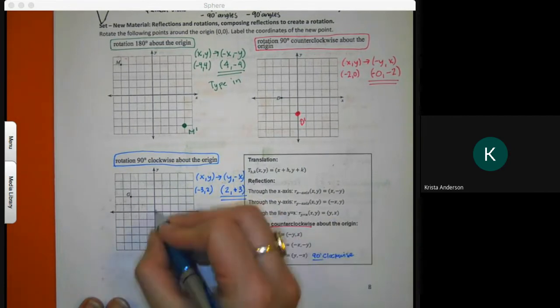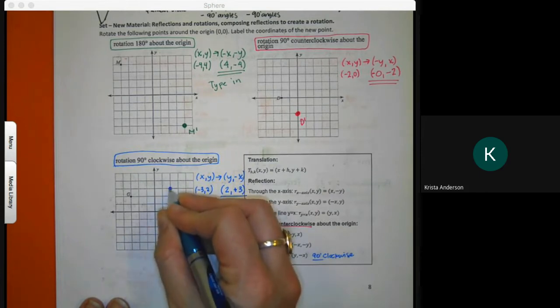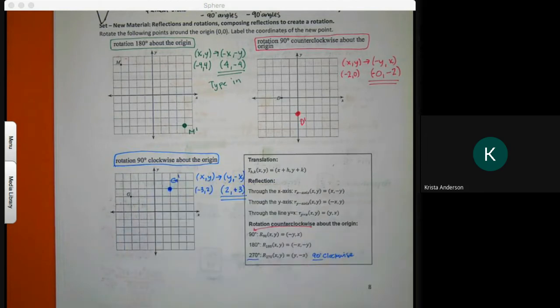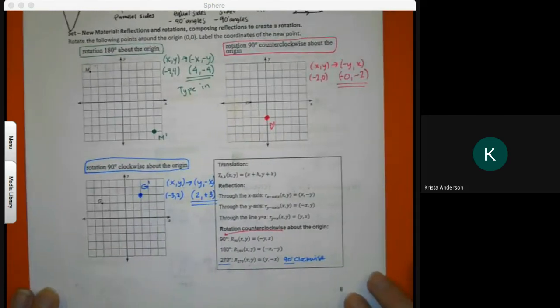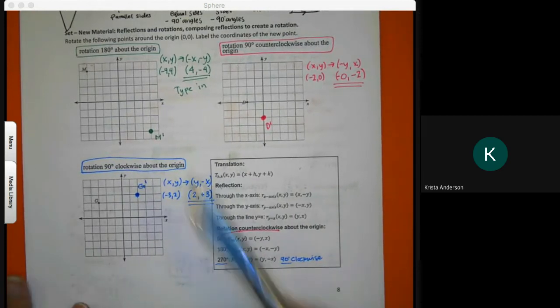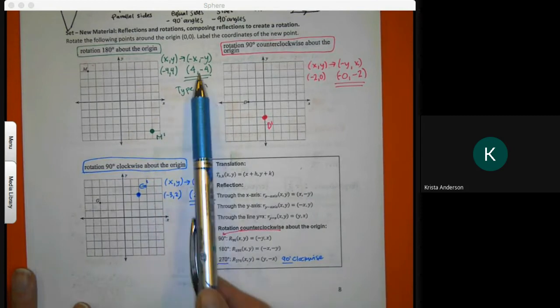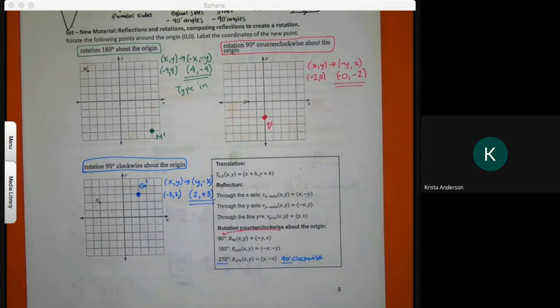If I were to graph it, over two, that's not three - here. So you will not be required to graph on these ones, you will just be required to find the new point and write down the coordinate. Any questions? Turn the page.